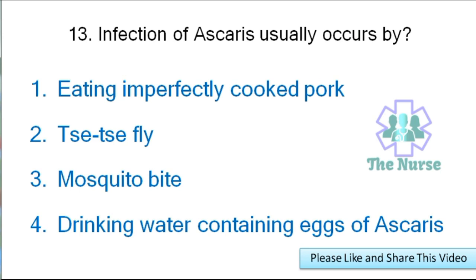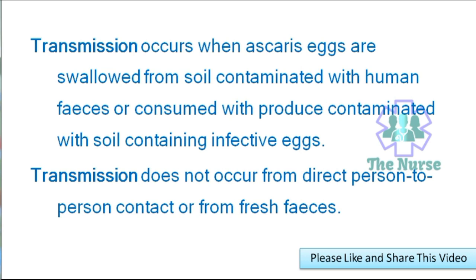Next question: Infection of Ascaris usually occurs by — eating imperfectly cooked pork, tsetse fly, mosquito bite, or drinking water containing eggs of Ascaris? Correct answer: drinking water containing eggs of Ascaris. Transmission occurs when Ascaris eggs are swallowed from soil contaminated with human feces or consumed with produce contaminated with soil containing infective eggs.